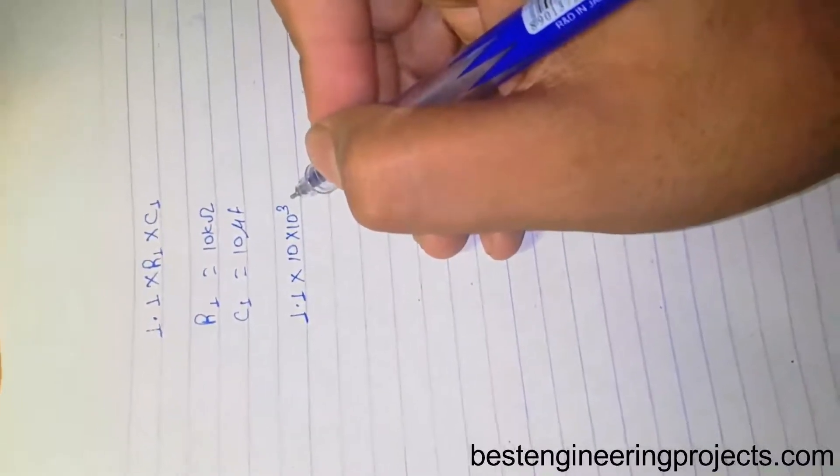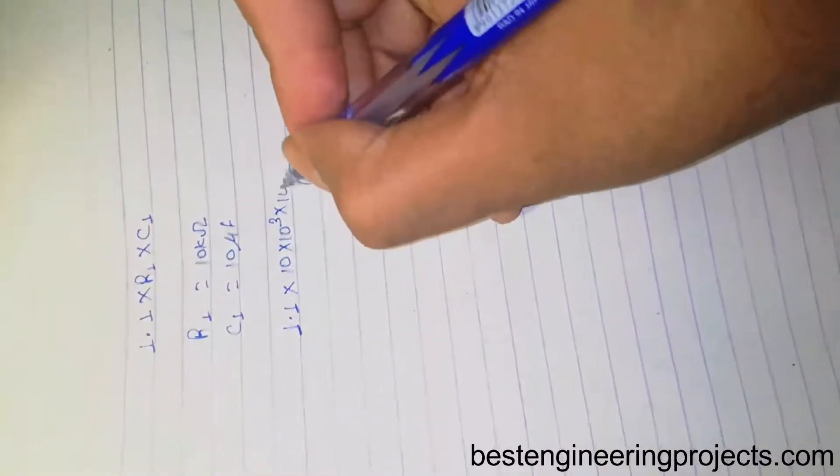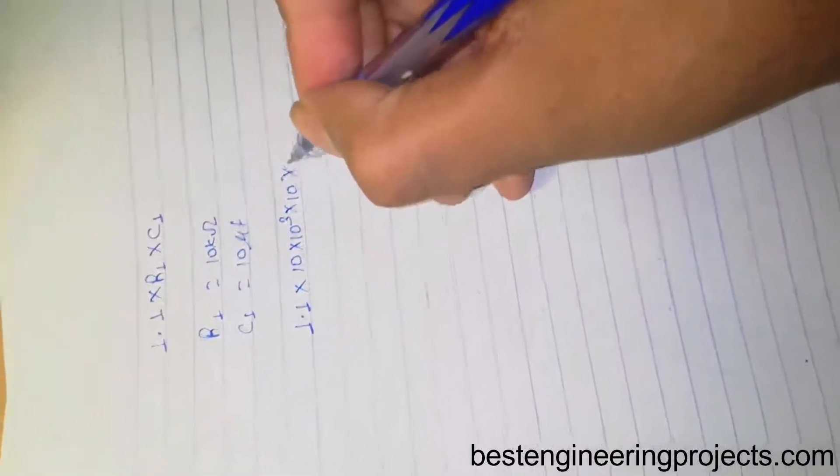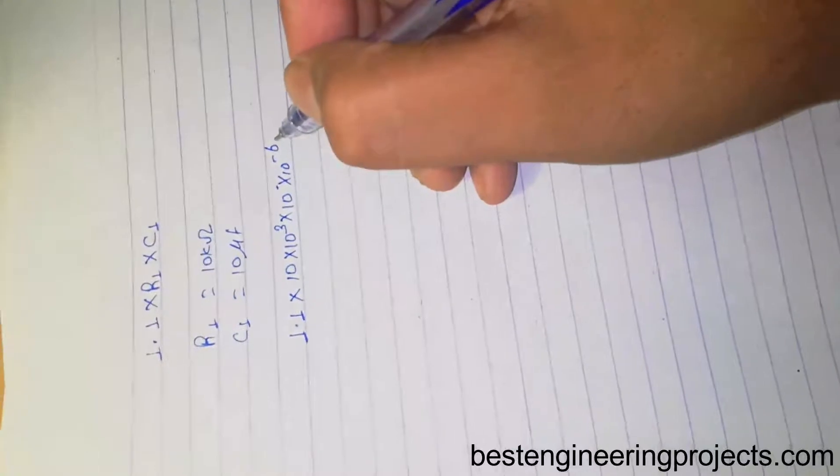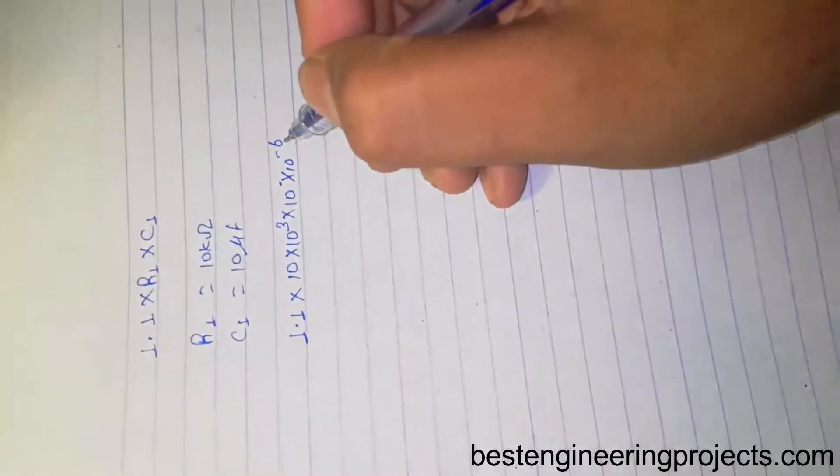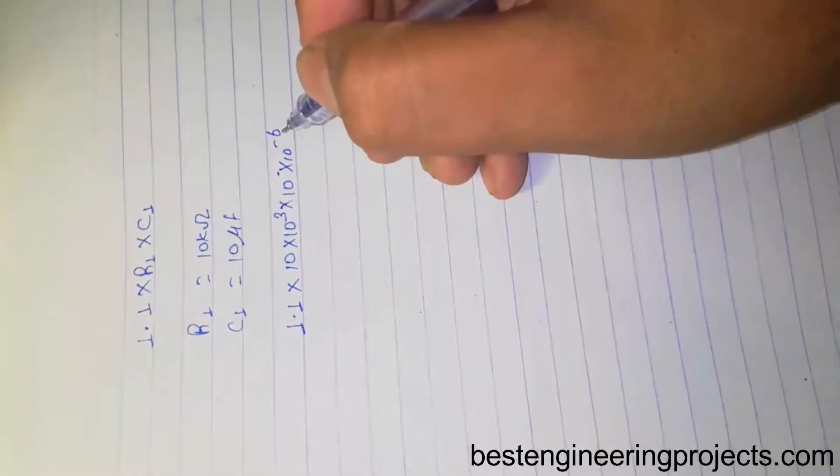Because 1 kilo ohm equals 10^3 ohms, and the capacitor I used here is in microfarads, which is 10^-6.